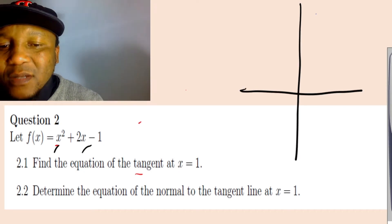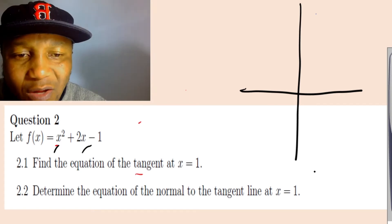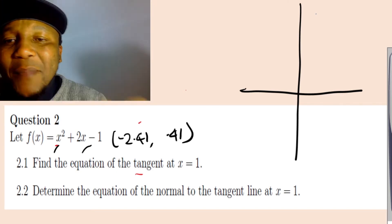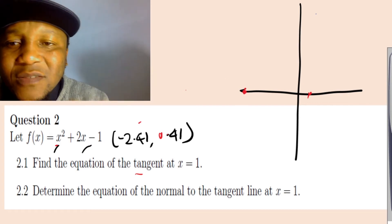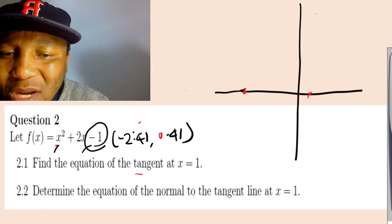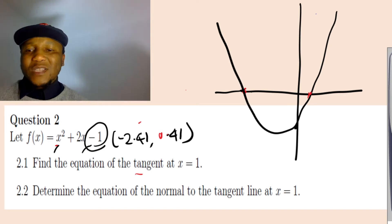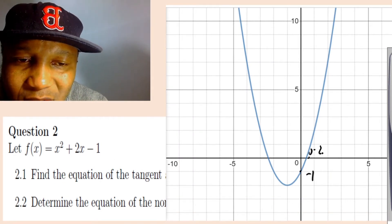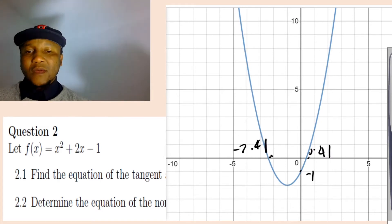Let's find the x-intercepts. You can use the quadratic formula. The x-intercepts are going to be approximately negative 2.41 and 0.41. The y-intercept is negative 1. So if I draw this rough sketch, it will look something like this — negative 1 on the y-axis, 0.41 and negative 2.41 on the x-axis.